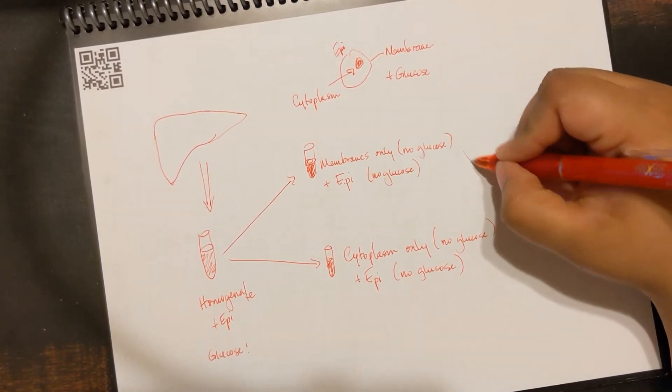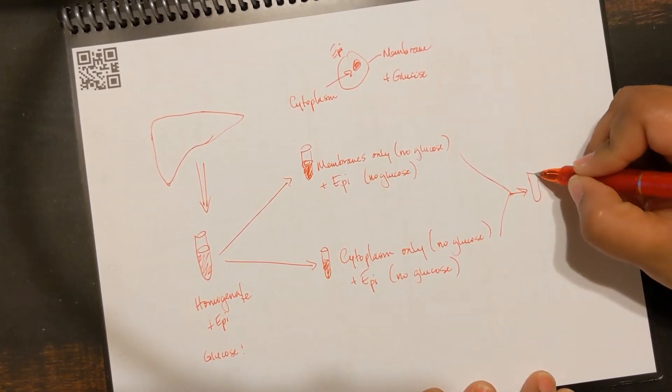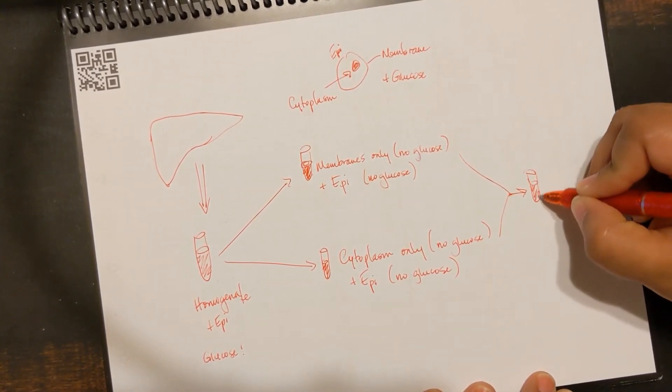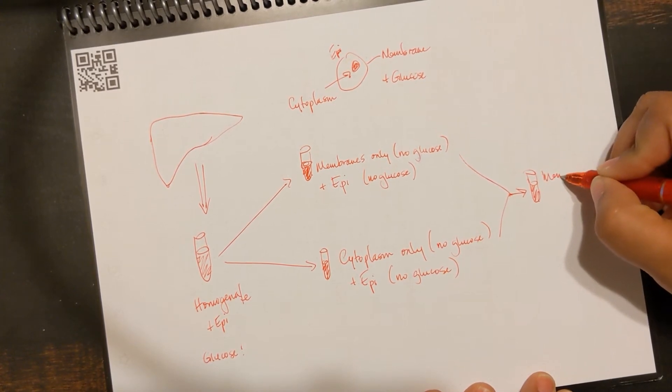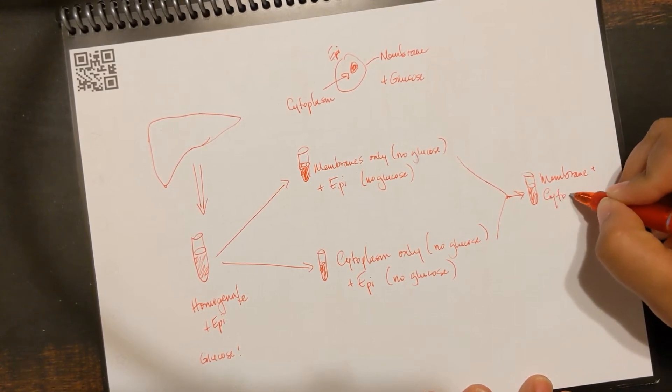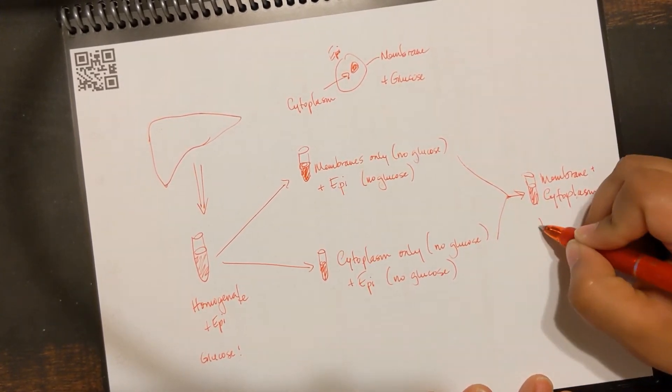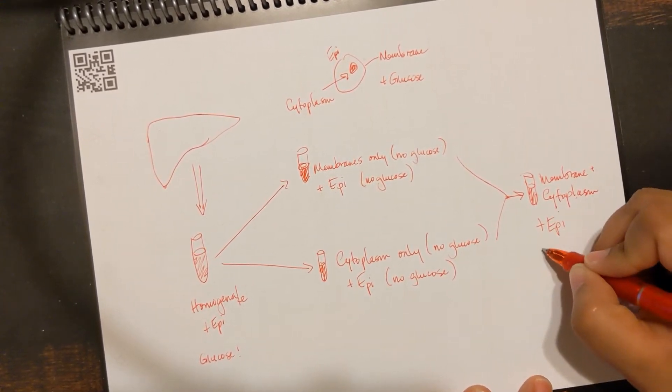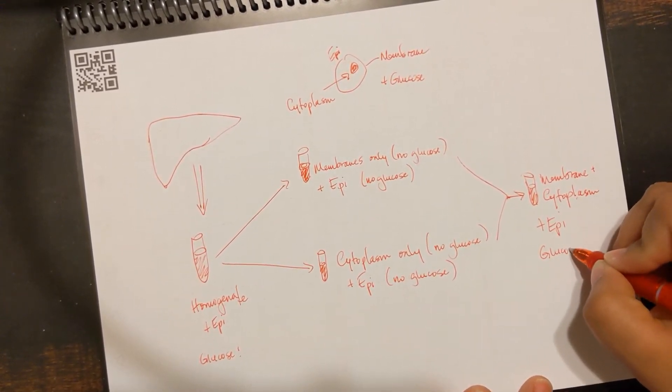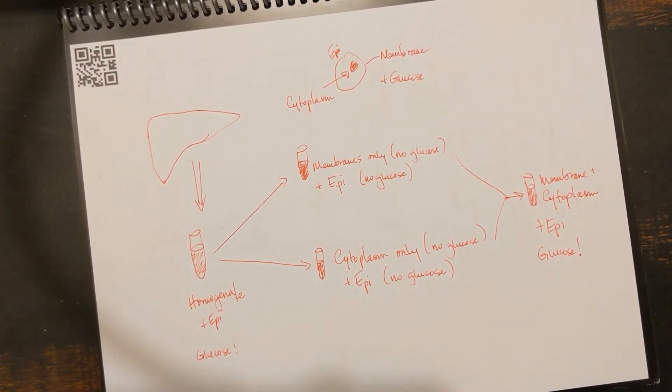So then he combined the two. Do I need both components? He had another tube with membrane and with the cytoplasm. And then he added epinephrine and lo and behold, glucose was formed. He concluded that you needed both components, both the membranes and the cytoplasm in order to have epinephrine have its action.